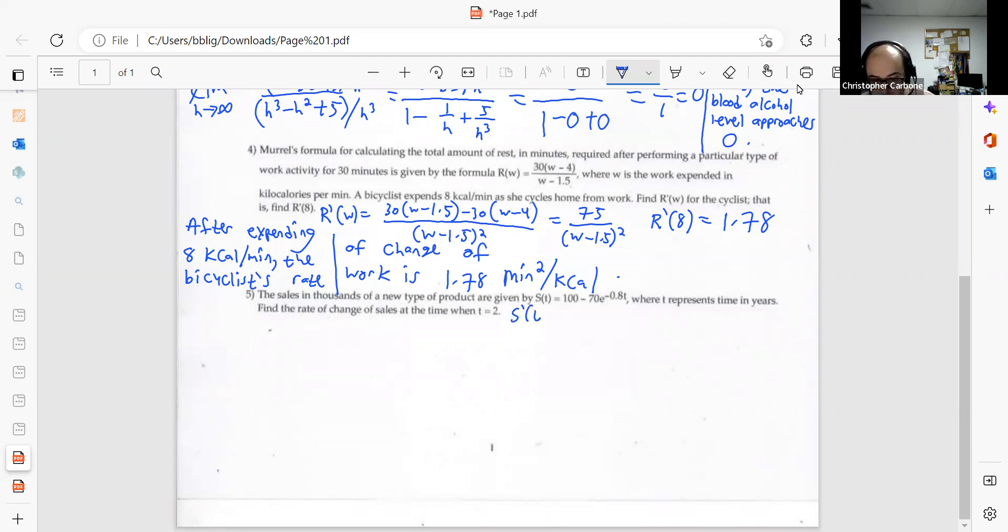S prime of t would be negative 70 times negative 0.8, which makes 56 times e to the negative 0.8 times t power. And if we put 2 into this derivative, we get a value of about 11.31, rounding to 2 decimals.